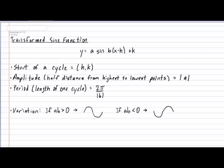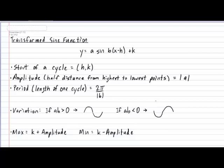The final element we can identify from the transformed sine function — which helps us draw a very decent curve — is the maximum and minimum values of the graph. The maximum can be calculated with the formula k plus the amplitude, and the minimum value can be calculated with k subtract the amplitude.